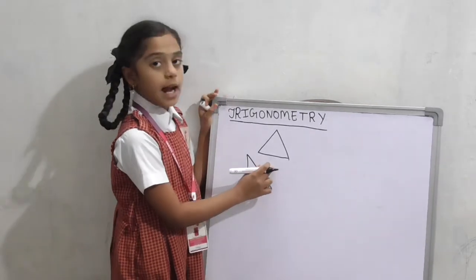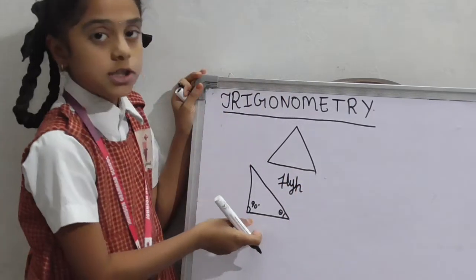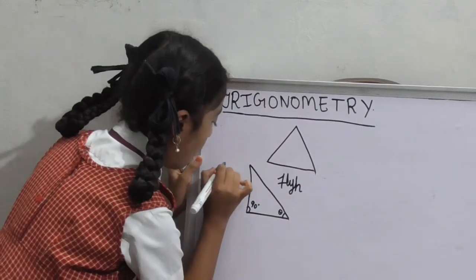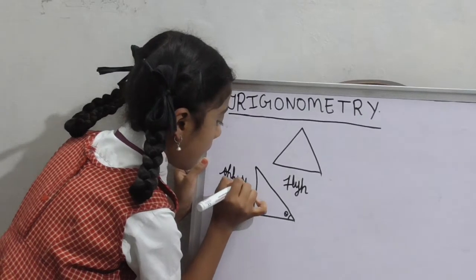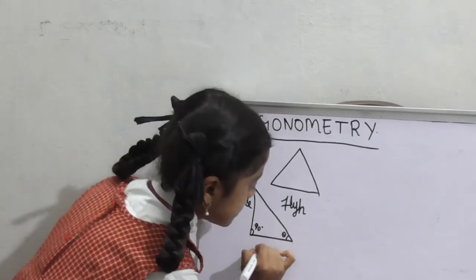Opposite to 90 degrees is hypotenuse. Opposite to theta is opposite side. The adjacent side of theta is adjacent side.